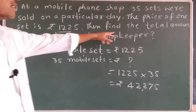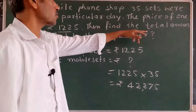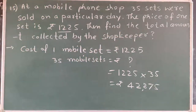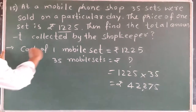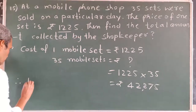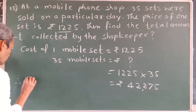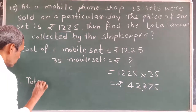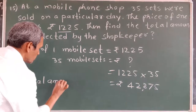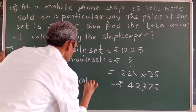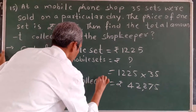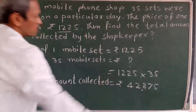What we should write for the last sentence: we should find the total amount collected by the shopkeeper. Therefore, total amount collected by the shopkeeper is rupees 42,875.